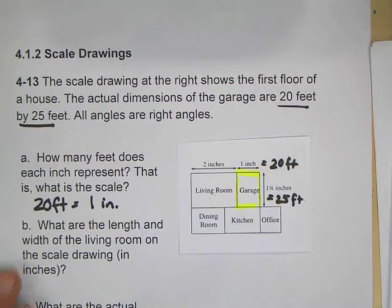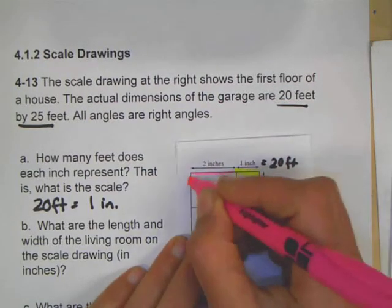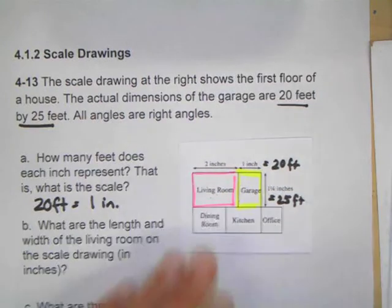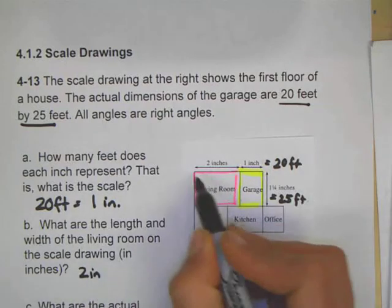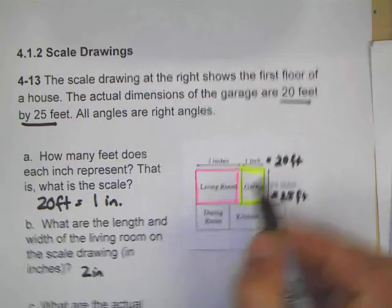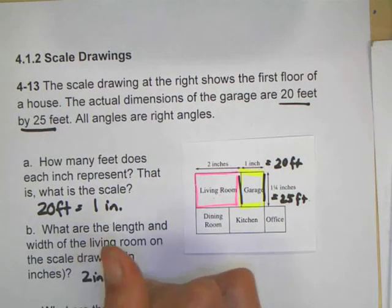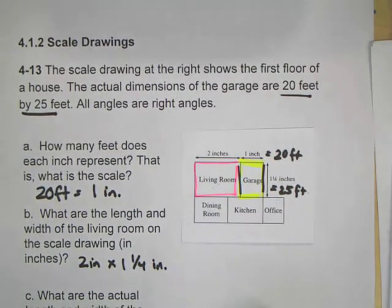Now the next part asks, what are the length and width of the living room? So now I'm looking at the living room on this scale drawing. I can see that I have 2 inches, and then this piece here is the same as that. So it's 2 inches by 1¼ inch.